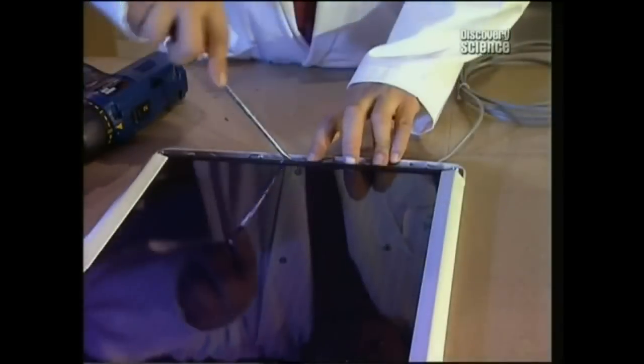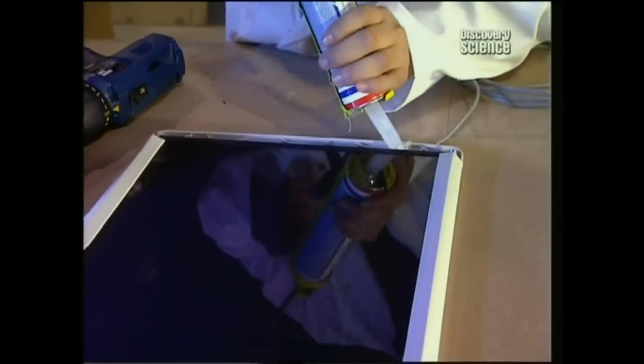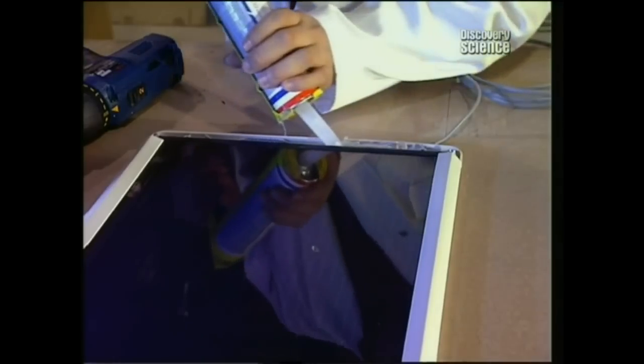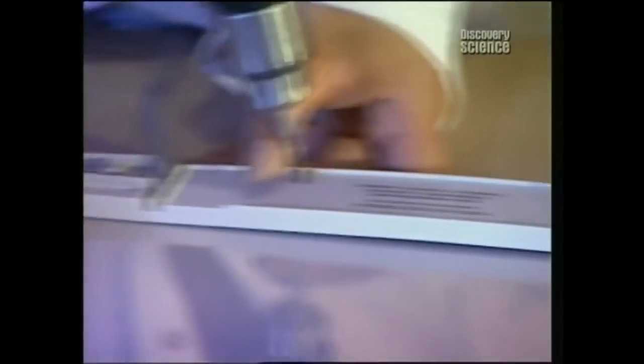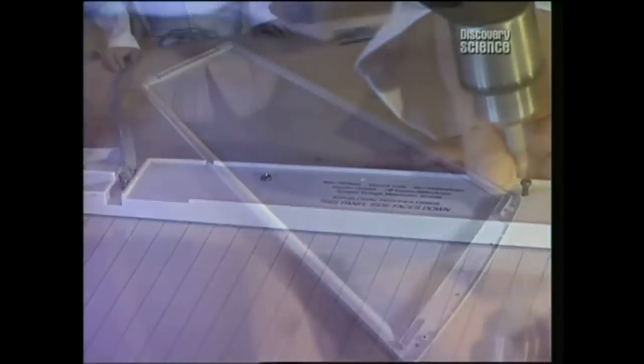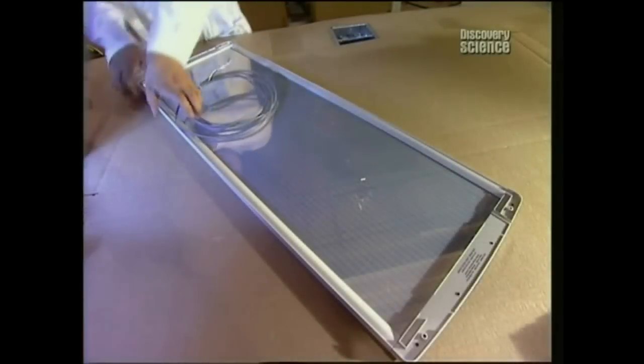The panel is placed into a plastic frame and glued in place. Then the frame is screwed tight so that it won't move. The solar panel is put into a plastic frame and is now completed.